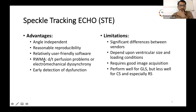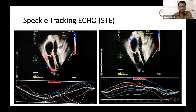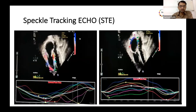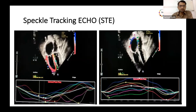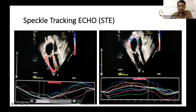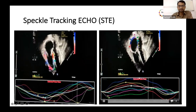Speckle tracking echocardiography has advantages of angle independence, reasonable reproducibility, relatively user-friendly software, and can detect early subtle ventricular dysfunction. Although it has some limitations — significant differences between different vendors, dependence on ventricular size and loading conditions, and requirement for good image acquisition — speckle tracking is used to calculate RV strain and RA strain as shown.